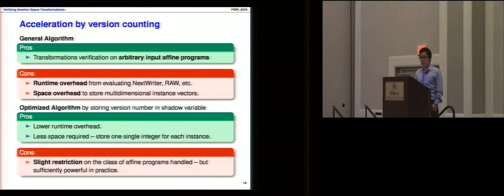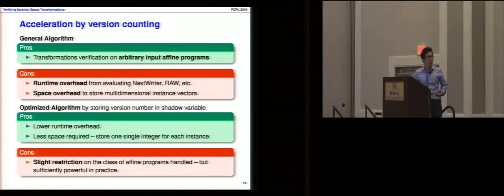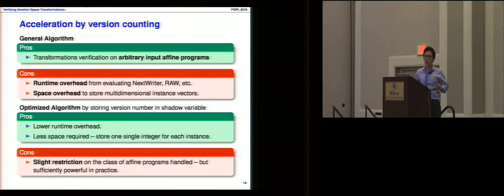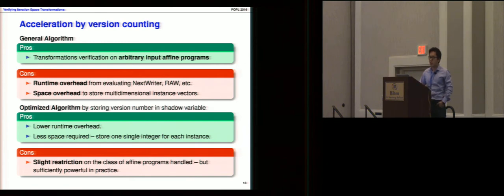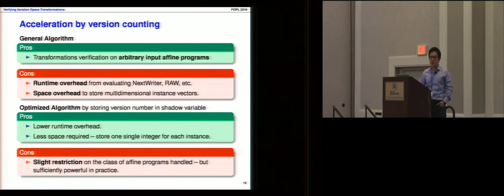The general algorithm is generic for all affine input programs but has minor costs: runtime and space overhead due to storage of the last produced instance. This can be optimized by storing just a version number in the shadow variable instead of the full last instance — representing how many writes have occurred to a particular memory location. This reduces overhead and space requirements but applies to a limited class of affine programs where the loop iterators can be recovered from the statement array access index functions, requiring the linear system to be full rank.